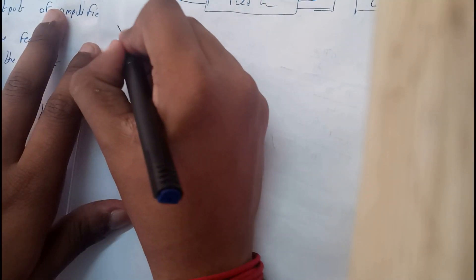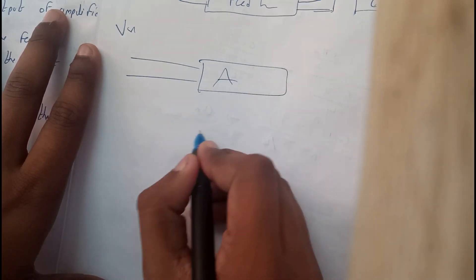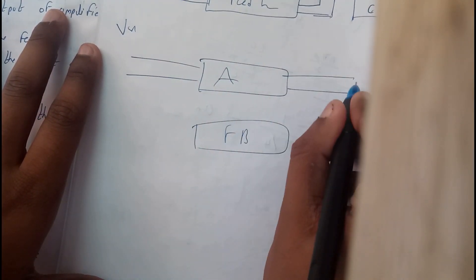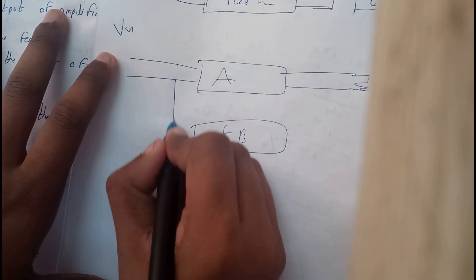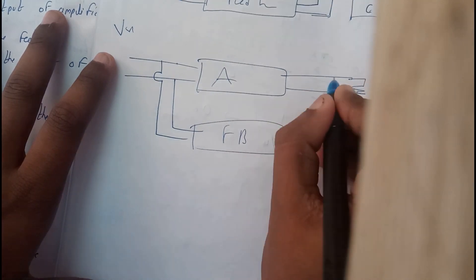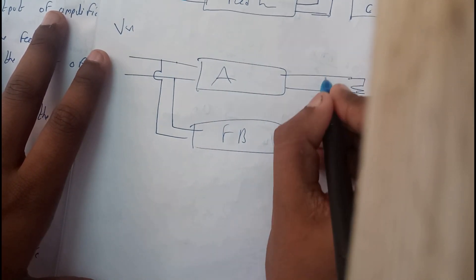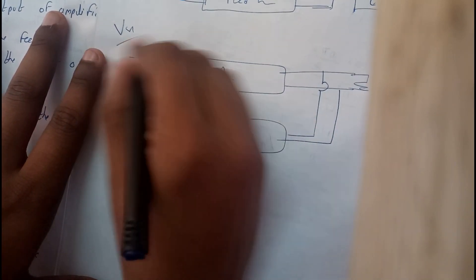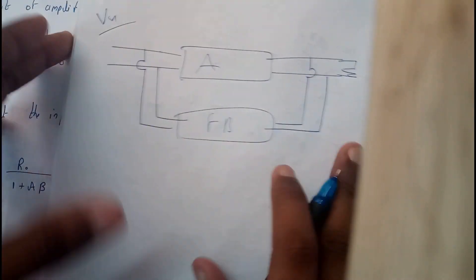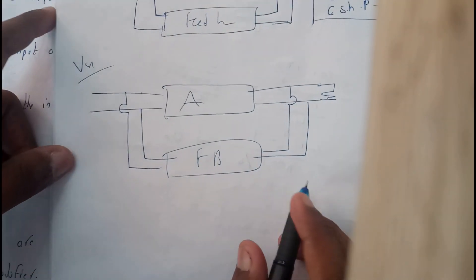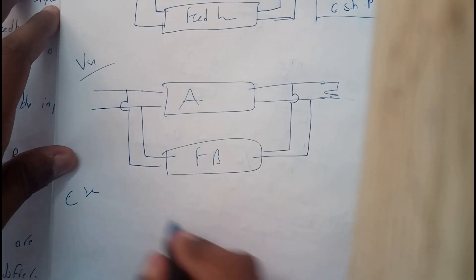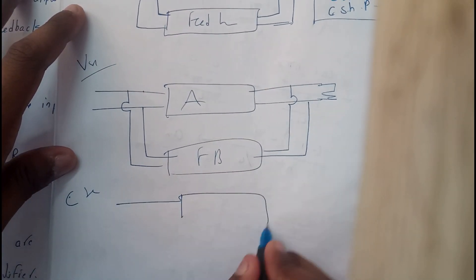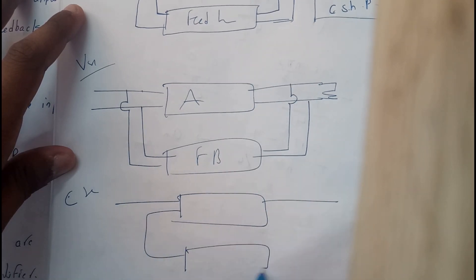Voltage shunt is nothing but both parallel, so you draw the amplifier and feedback network with parallel connections on both sides — from the below one you get a direct connection, from the above one a bubble. Current series (SS) uses only series connections: the upper and lower lines both connect directly.